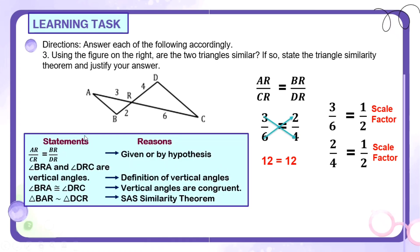Ito yung ating 2-column proof para ma-justify natin na they are similar. So let's have AR over CR is equal to BR over DR. So ayun yung given na, yung kanina. Or by hypothesis, itong AR over CR is equal to BR over DR. Then, angle BRA and angle DRC are vertical angles. Tignan natin. BRA, itong angle na to, and yung isa pa, DRC. Okay, so they are vertical angles. Hence, since they are vertical angles, angle BRA is congruent to angle DRC. Why? The reason, vertical angles are congruent.